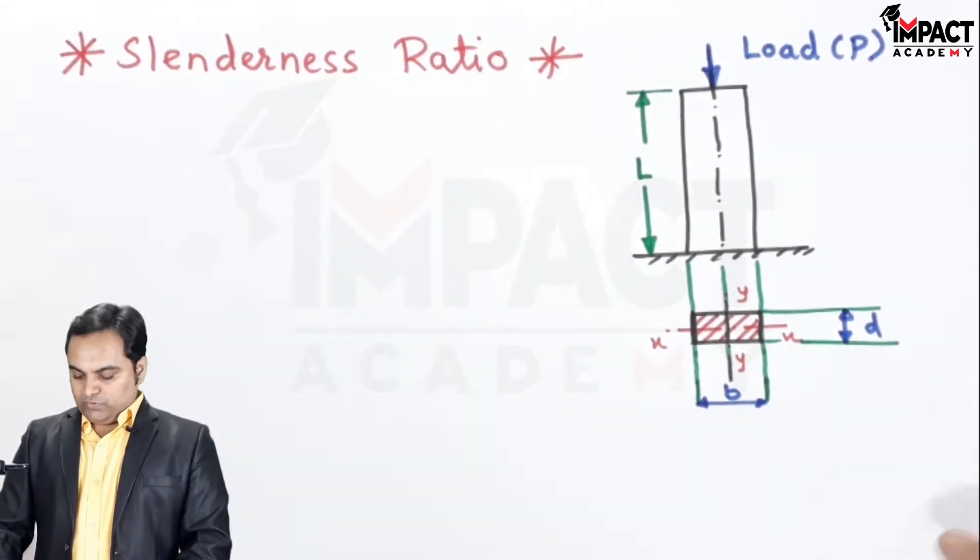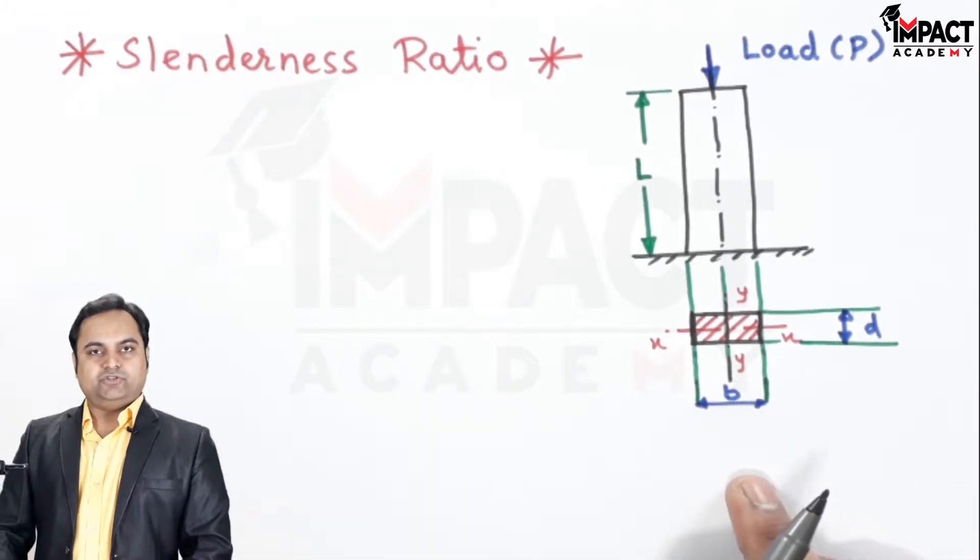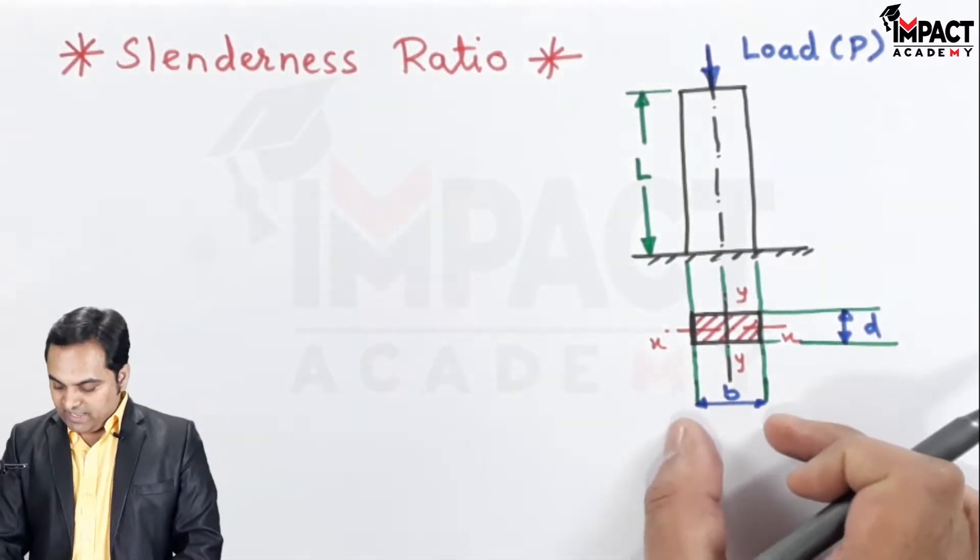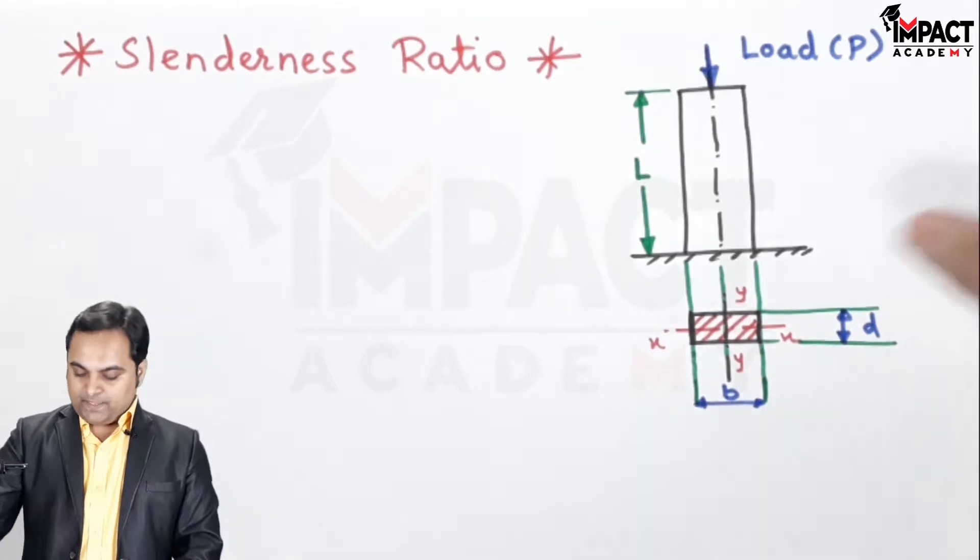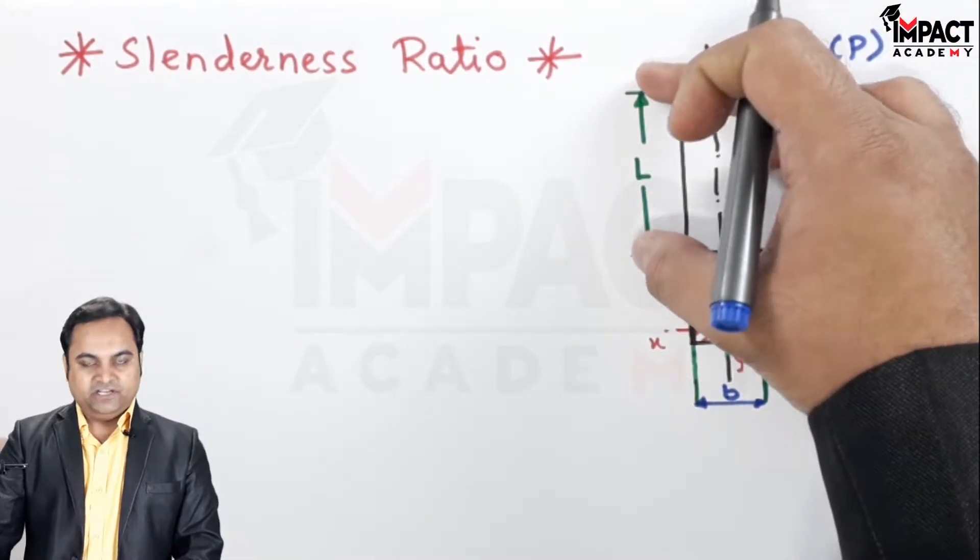Here there is a diagram of a column which is rectangular in cross section, having width B and depth D. The length of the column is capital L.